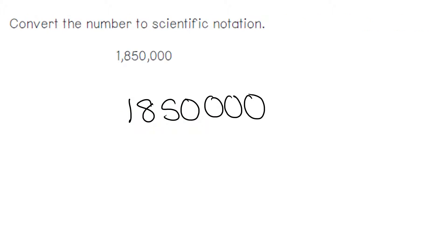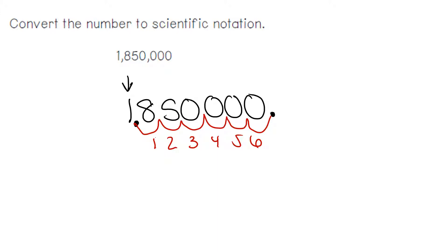For this one, there is no decimal in the problem, so the decimal is here at the end. We want to move the decimal behind the first number, which is a one. To move the decimal, we have to go six times. When we write the final answer, we do not write the zeros — so it's just 1.85, always times 10. In this case, it's to the sixth power. It's a positive six because that is a very large number, 1,850,000, and we've moved the decimal six times.